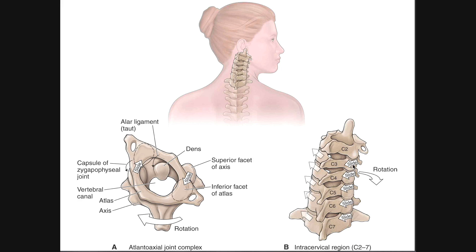On the right side, three things: one, the zygapophyseal joints are going to have to come a little bit closer together, so the articulating surfaces decrease in their distance apart — a little bit of compression on the zygapophyseal joint; two, the anterior annulus fibrosus will be decompressed; and three, we'll see posterior translation of the vertebra above relative to the vertebra below.